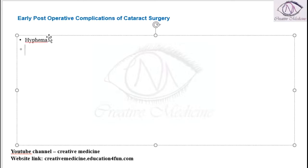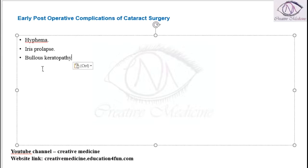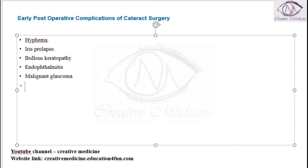Sometimes there can be infection in the anterior chamber leading to hyphema. The iris can also prolapse, resulting in iris prolapse. Bullous keratopathy can also occur in the patient, and the patient can develop infection of the eye called endophthalmitis.